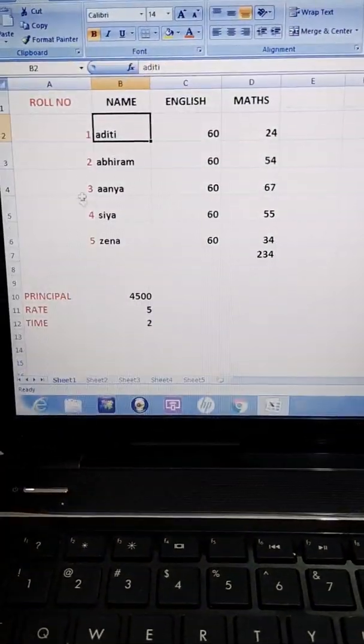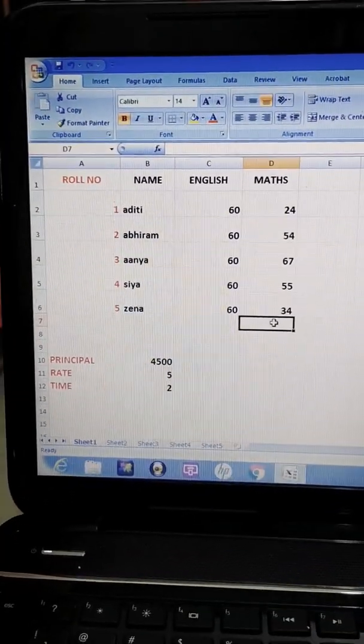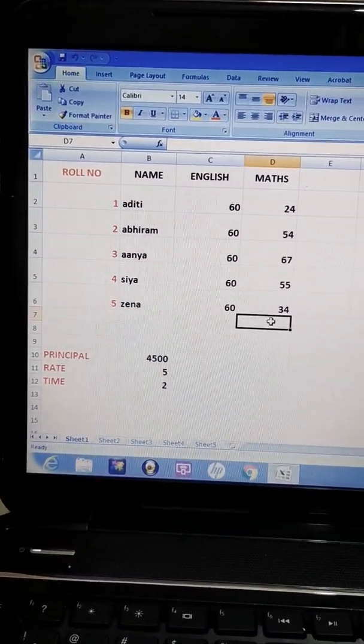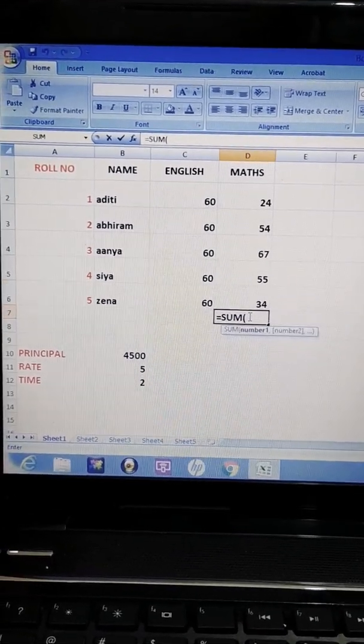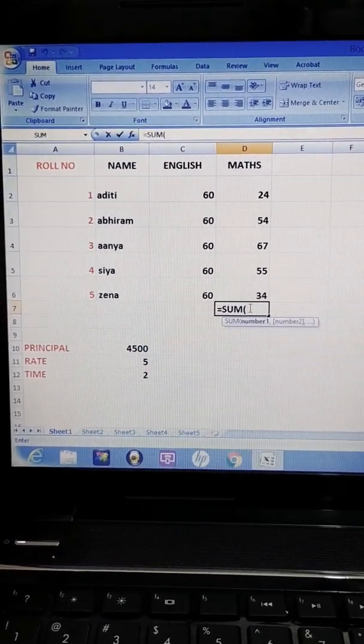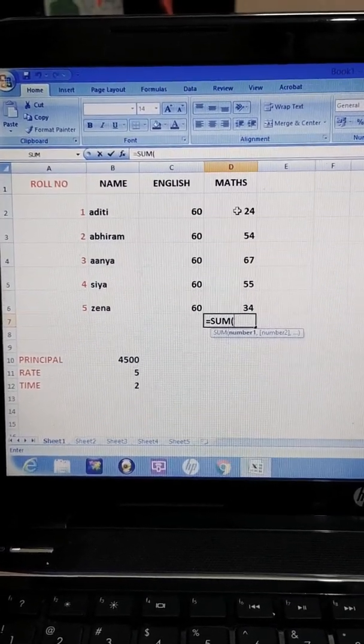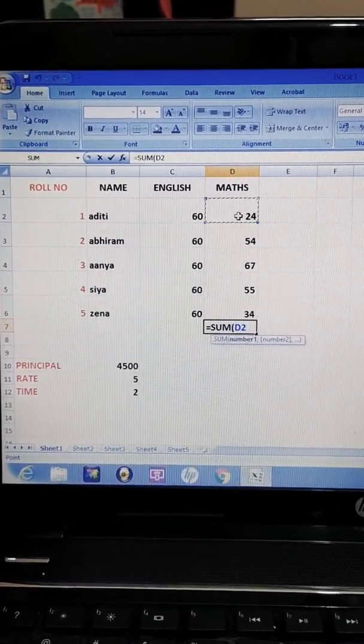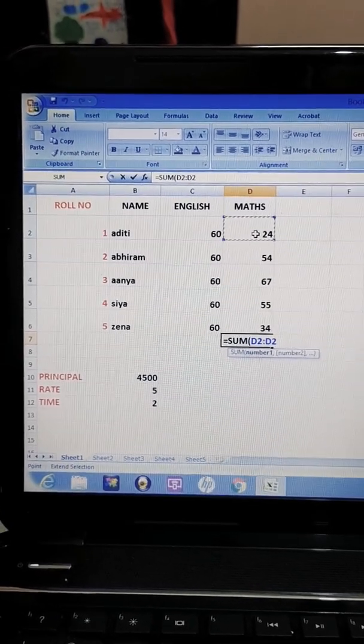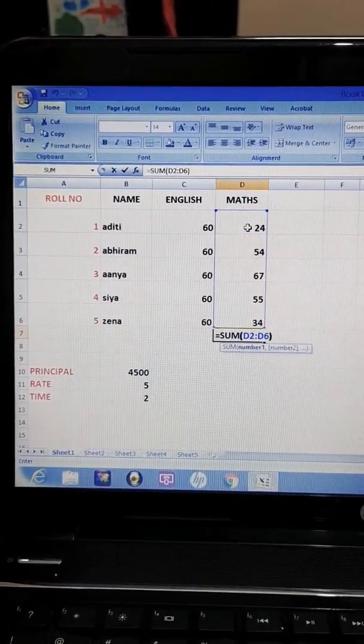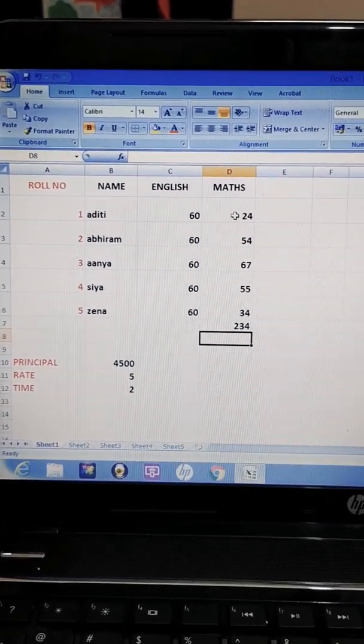If I have to find sum, I have to apply some formula like is equal to SUM. Every formula starts with equal to sign. I want to find sum of all the students in maths, so I'm writing one range from D2 to D6, so D2 colon D6. So answer is 234. So this is with a formula.